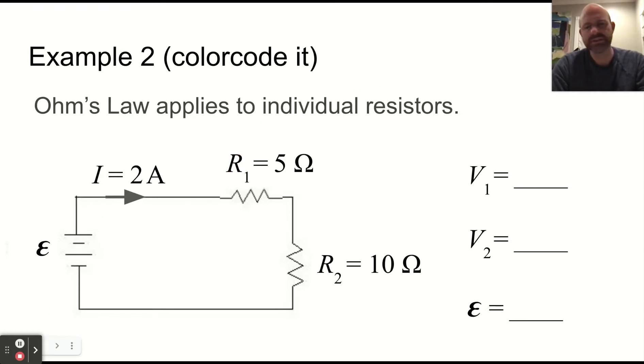We would also want to color code this circuit, individual resistors. We have a current going through, same current everywhere. Two amps times five ohms would give us 10 volts. Two amps times 10 ohms would give us 20 volts. And then if you do the loop rule to go around, you would say, oh, 10 plus 20 is 30 volts.